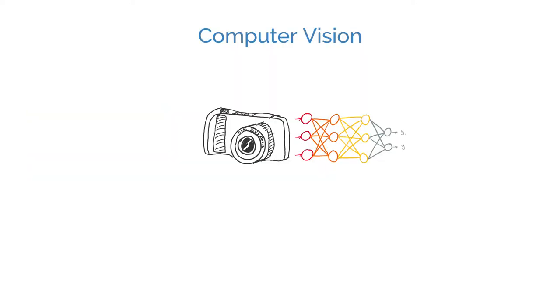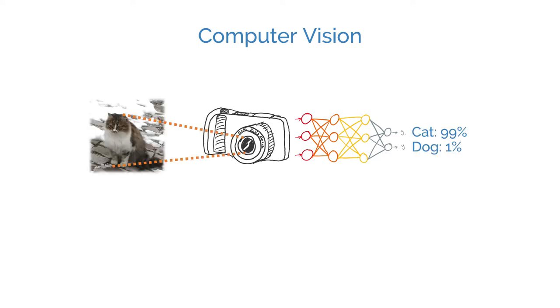Computer vision, on the other hand, focuses on making sense of what a machine sees. A computer vision system inputs an image and outputs task-specific knowledge, such as object labels and coordinates.